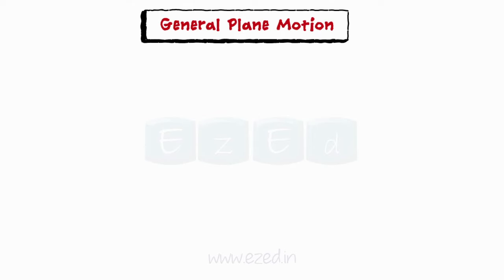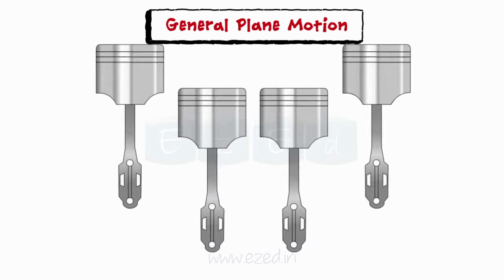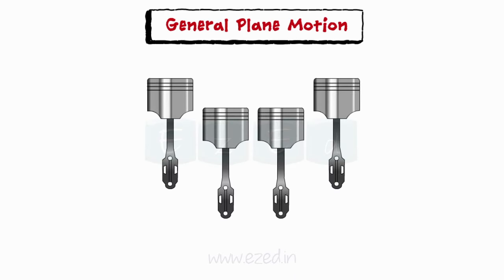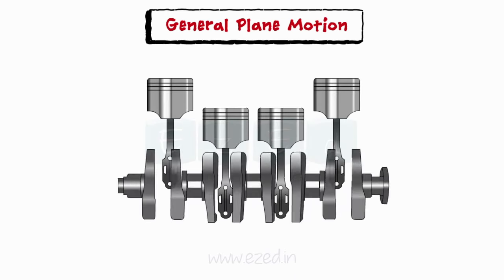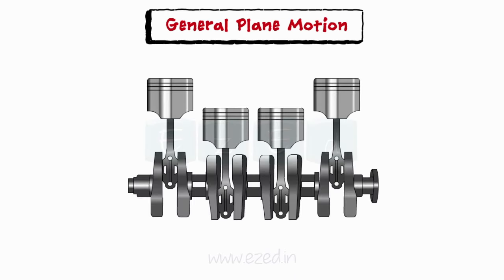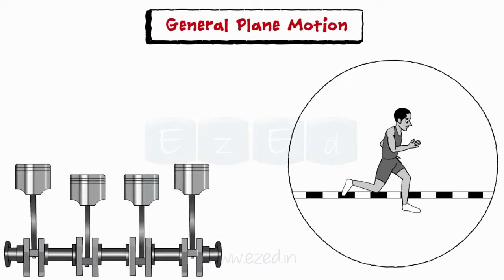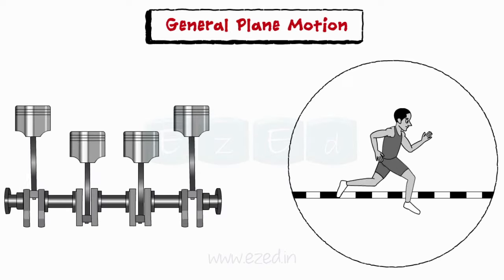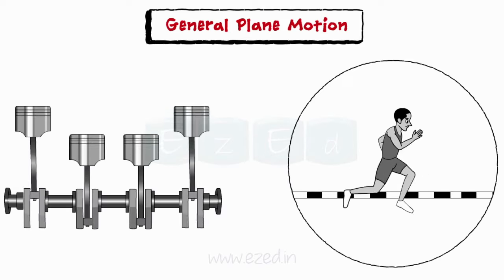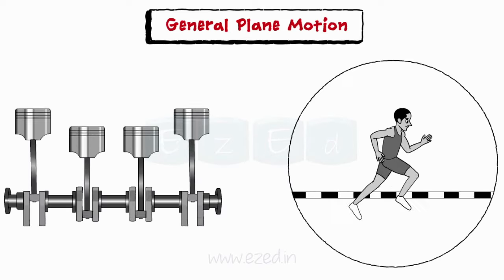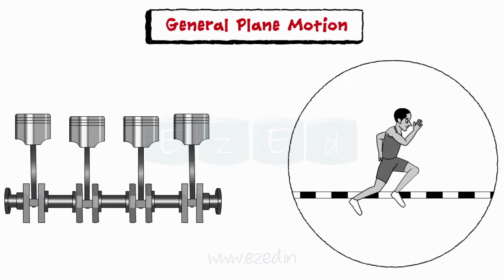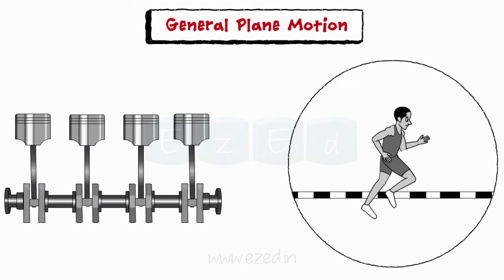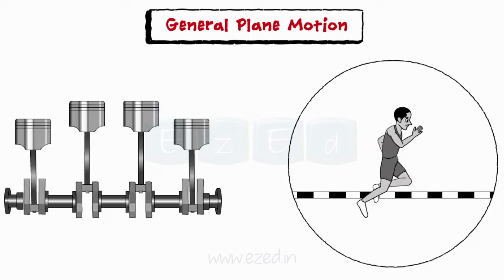A general plane motion is a combination of translation motion and rotation motion. Human movement usually consists of general motion rather than pure linear or angular motion.